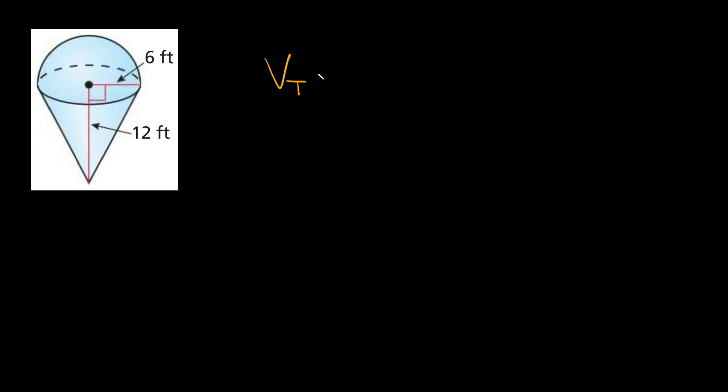Let's start with this first one right here. In order to find the volume of this solid we have to first find the volume of the cone underneath, and then find the volume of this half sphere — or in other words a hemisphere — and then just add those two together to get the total volume. So the total volume is equal to the volume of the cone plus the volume of the hemisphere.